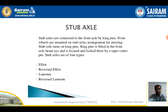Stub axles are connected to the front axle via king pins, and the front wheels are mounted on the stub axle arrangement in the steering system. The stub axle turns on king pins. The king pin is fitted in the front axle beam and is located and locked by a taper cotter pin, which locks the stub axle in place. It consists of a forged alloy steel component.